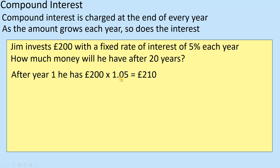If you're not quite sure why we times it by 1.05, this is the idea of a multiplier — knowing that it goes up by 5%. So if you want to look at the decimal multiplier for a percentage increase, this is a quick way of doing it. You could work out 5% and add it on, but this multiplier is absolutely critical for compound interest. Times by 1.05 — so 105% essentially, but in decimal format — which gives £210.